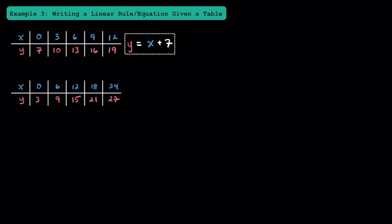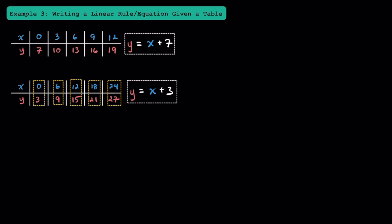Now let's take a look at this one. Think about how 0 becomes 3. We can add 3 to 0 to get 3. Trying that out: 6 plus 3 equals 9, 12 plus 3 equals 15, 18 plus 3 equals 21, and 24 plus 3 equals 27. Since our y values are just 3 more than each of the x values, we can write our linear equation as y is equal to x plus 3.